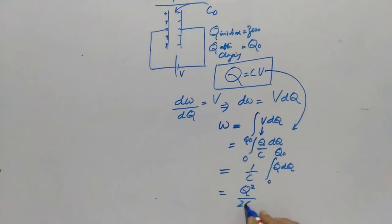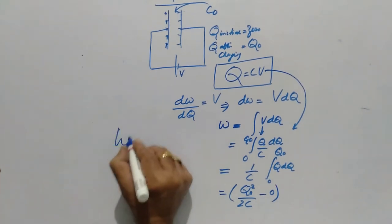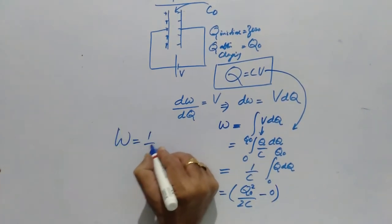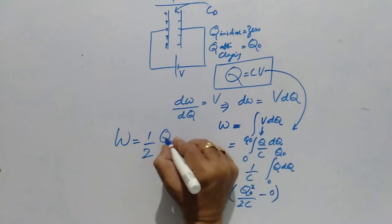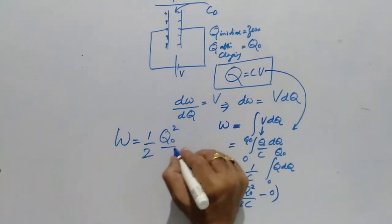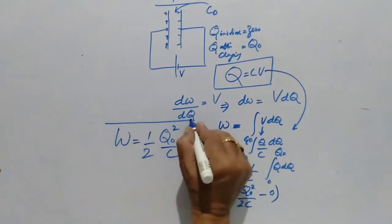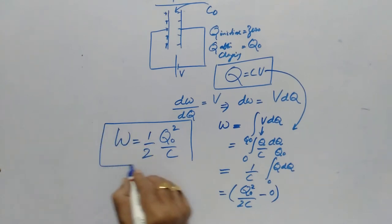By 2C, when we write the upper limit it becomes Q₀². When we write the lower limit it becomes 0. The final answer: W = ½Q₀²/C. This work done is stored in the form of potential energy.